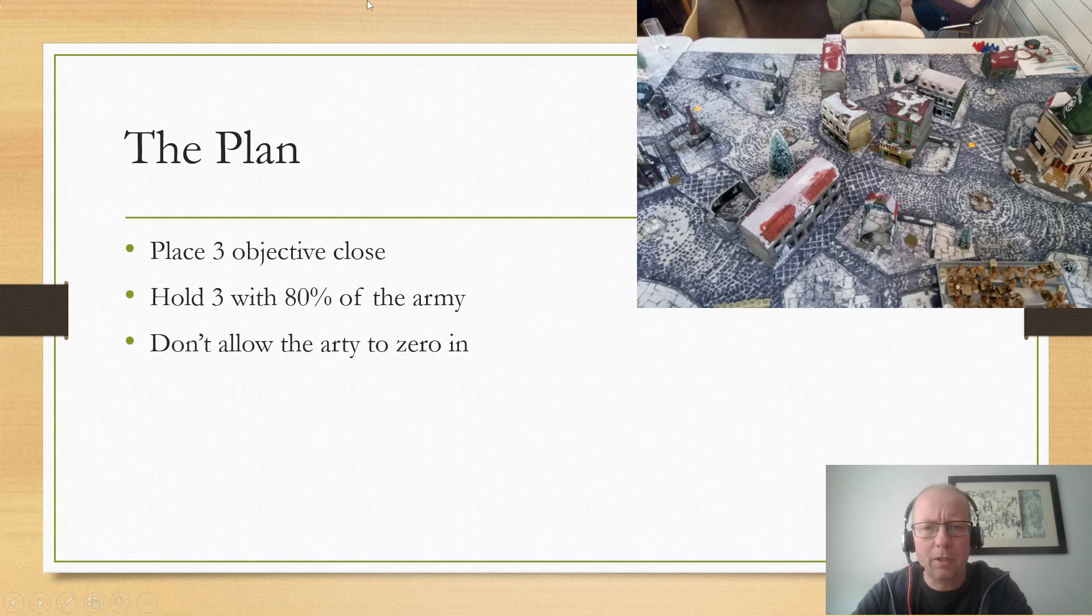In this picture here, you can see where the objectives went down. Bert started with the one in the center, and I immediately put down one over here, 12 inches apart, so I could run from one to the other with line of sight blockers. Bert then placed one here, which meant I countered by placing one there, 12 inches apart. Then he placed one in the back line here.